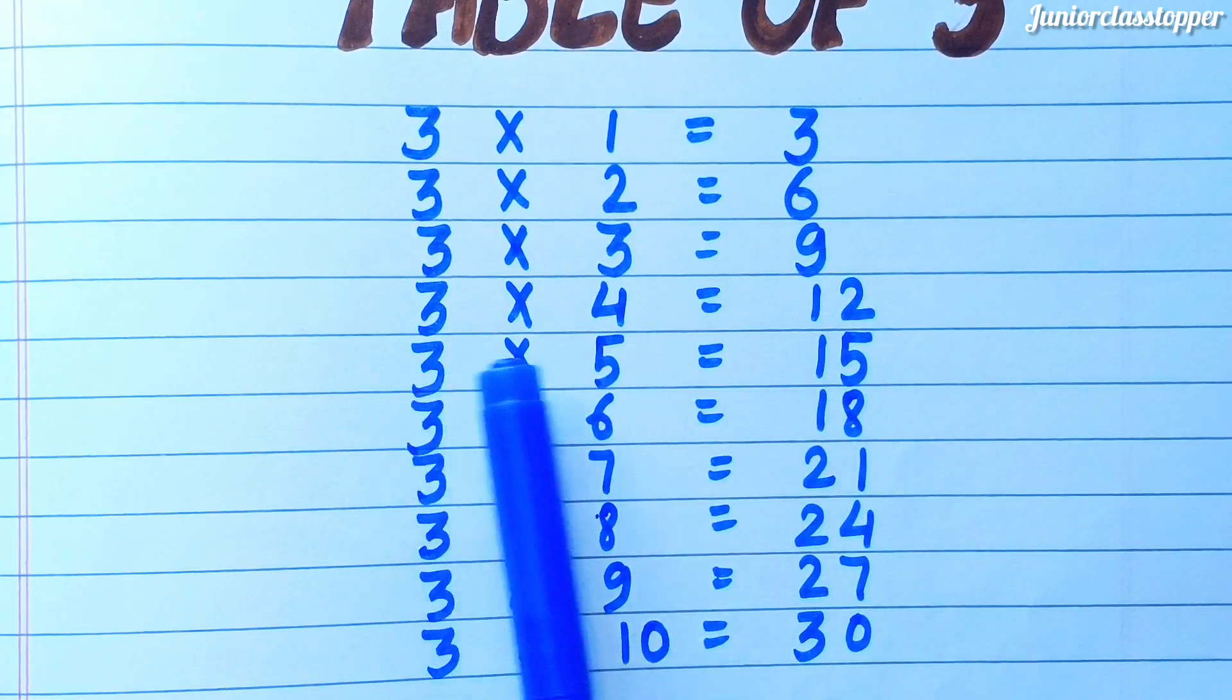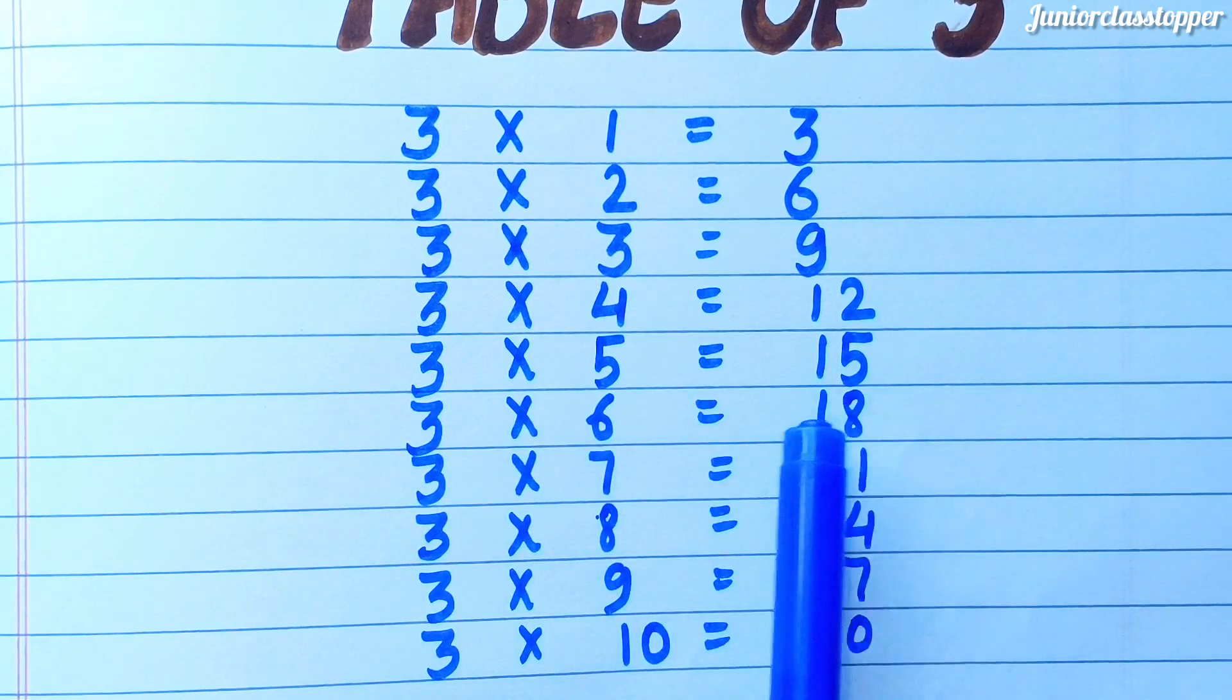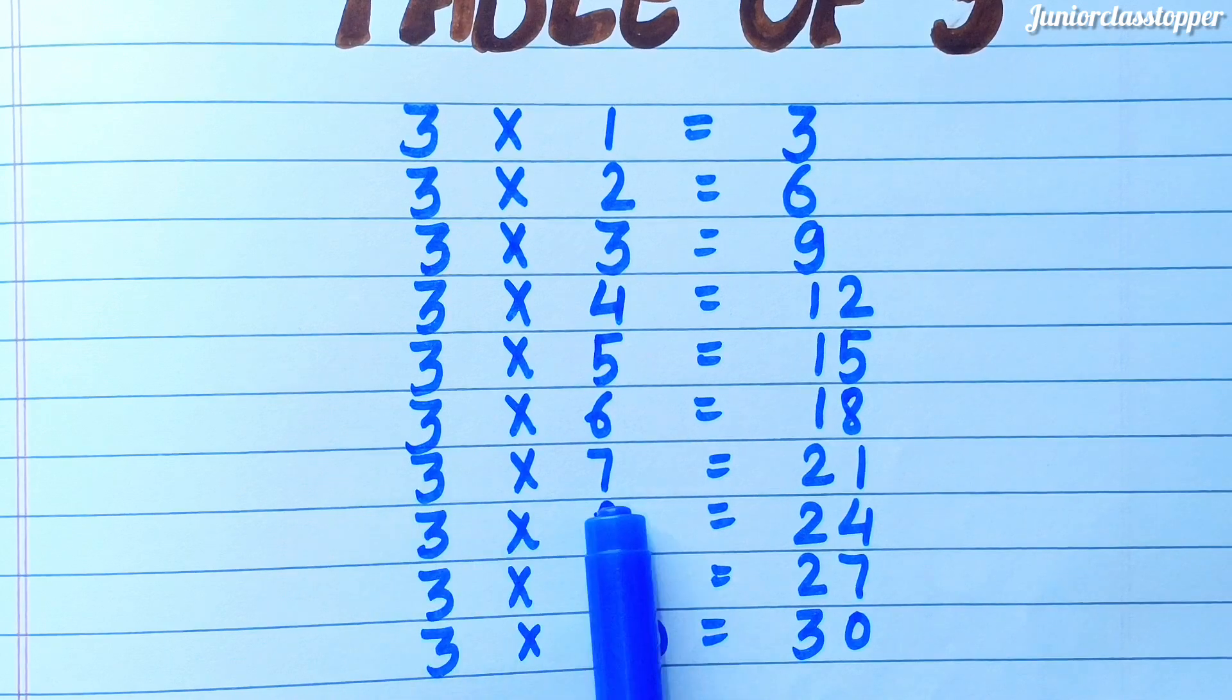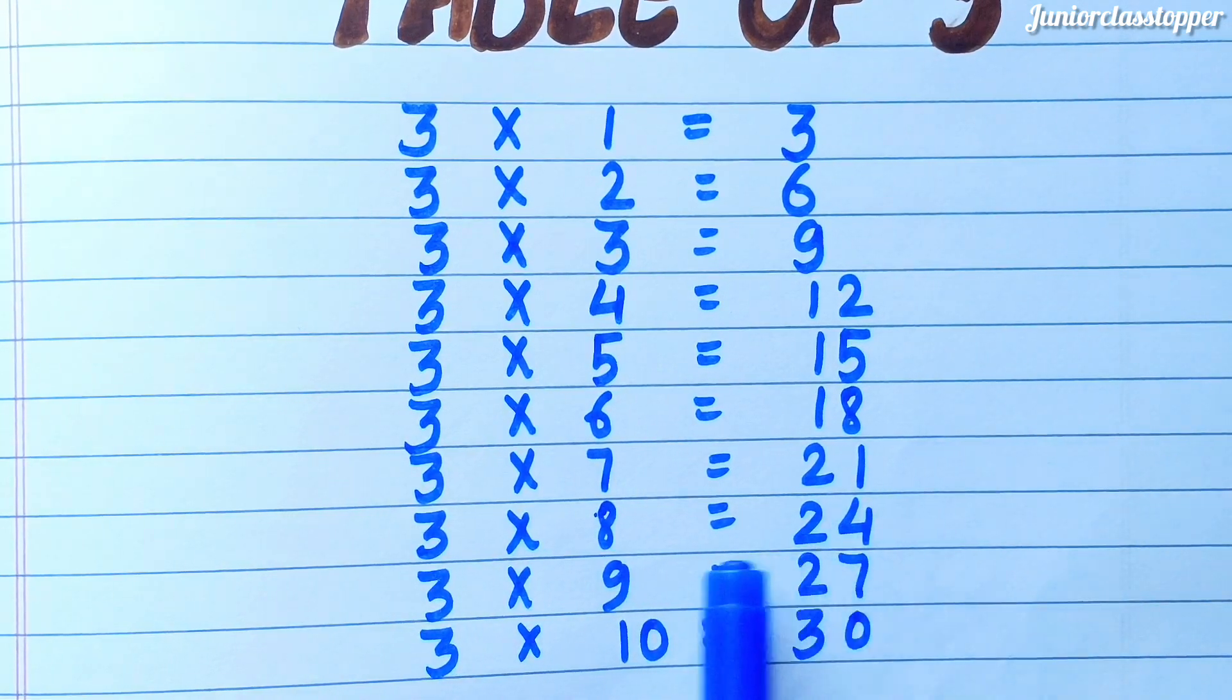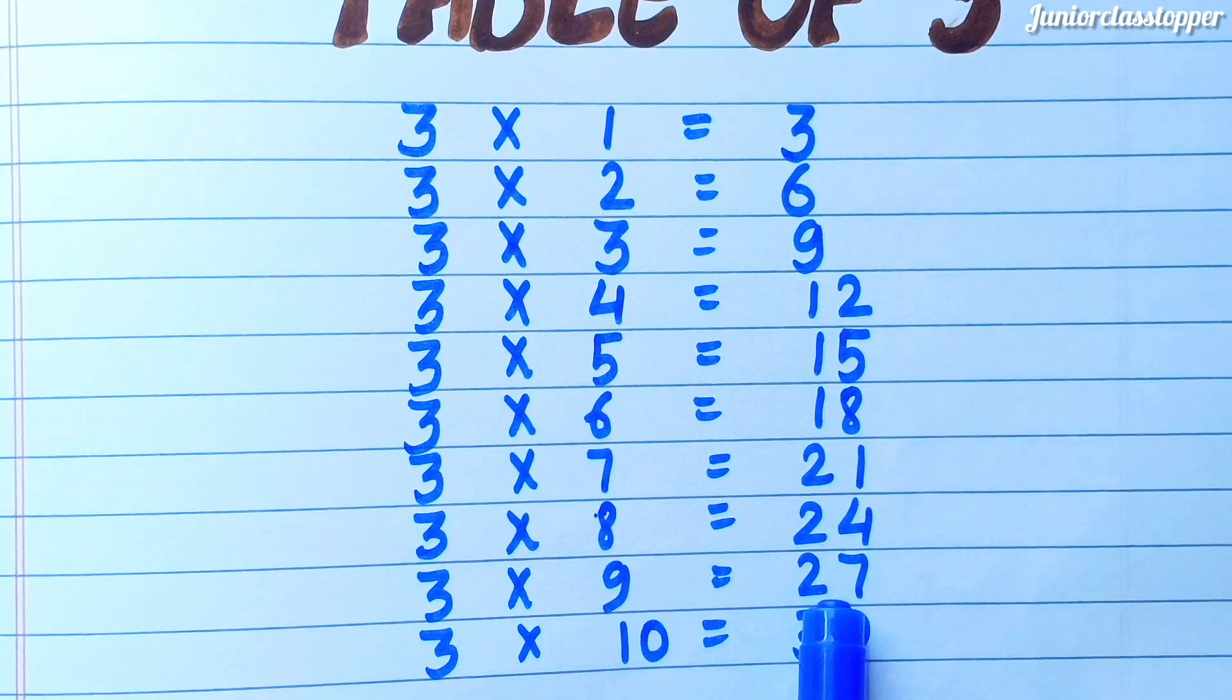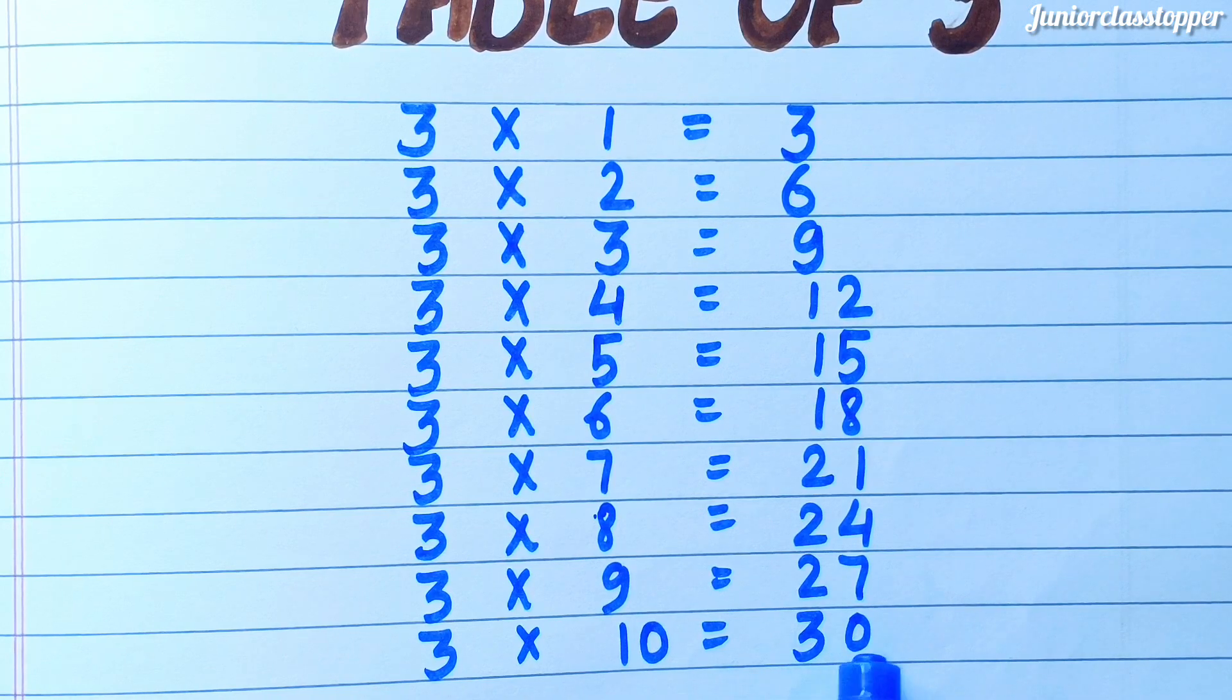Three fours are twelve, Three fives are fifteen, Three sixes are eighteen, Three sevens are twenty-one, Three eights are twenty-four, Three nines are twenty-seven, Three tens are thirty.